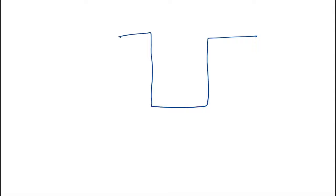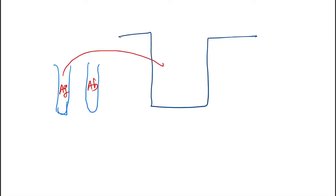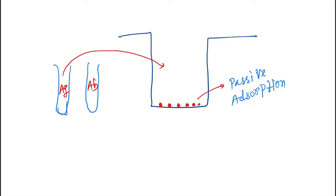In a single well, we take serum — this contains antigen and antibody. First we take antigen, and the antigen will bind to the surface of the well. We then do a washing process, and in this washing process the remaining unbound antigen will be gone.